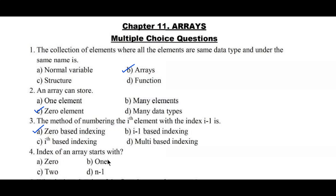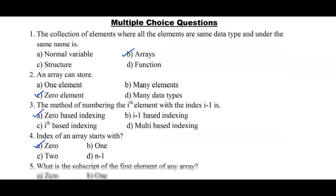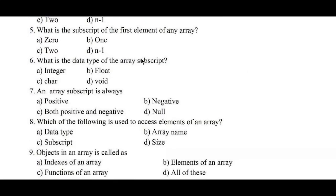Question number four: index of an array starts with — option a) zero, b) one, c) two, d) n minus one. The index of an array always starts with zero, hence option a is the right answer. Question number five: what is the subscript of the first element of any array? Options: a) zero, b) one, c) two, d) n minus one. Array subscript always starts with zero, hence option a is the right answer.